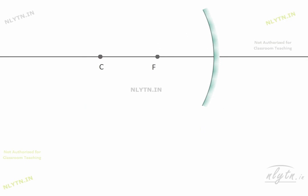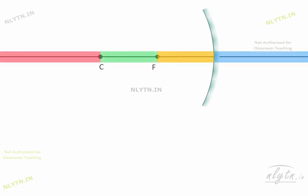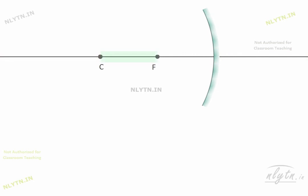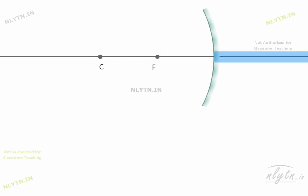Here we can see that the space around the mirror consists of four regions. This region extends from infinity to the center of curvature. This region is between the center of curvature and focus. This region is between the focus and the pole of mirror. And this region is beyond the pole to the other side till infinity.